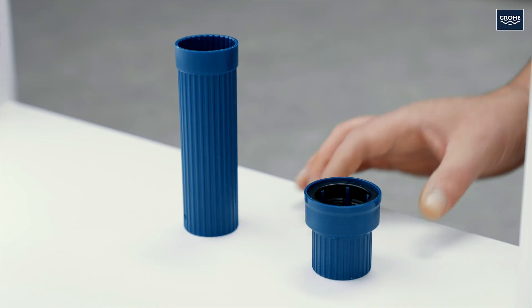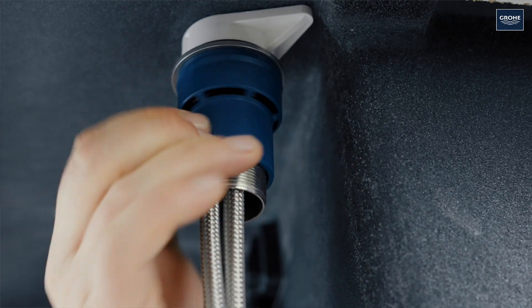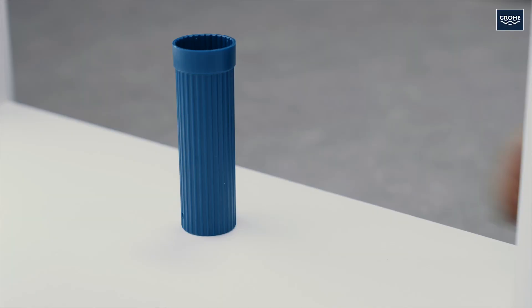Push the fastening elements together with the fast fixation system gently over the threaded pipe as far as it will go and tighten it gently with the help of the extension.